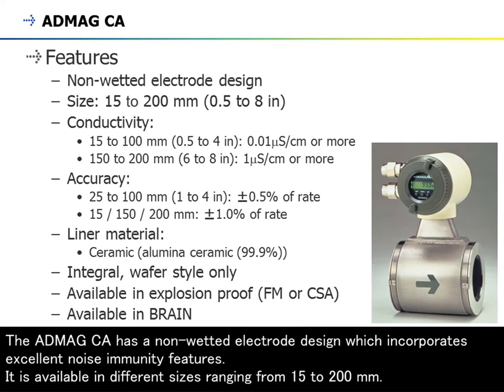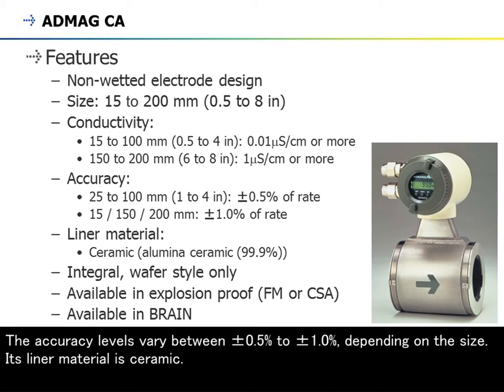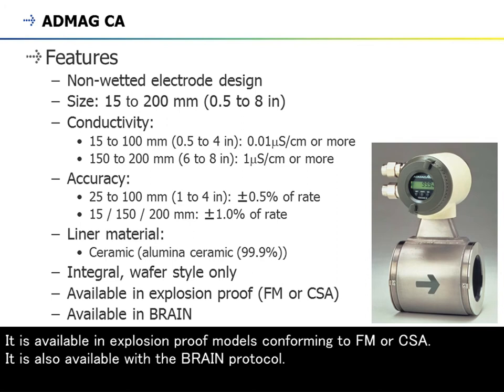The Abmec CA has a non-wetting electrode design which incorporates excellent noise immunity features. It is available in different sizes ranging from 15 to 200 millimeters. The Abmec CA is suitable for ultra-low conductivity measurement ranging from 0.01 microsiemens to higher conductivities depending on the flow meter size. The accuracy levels vary between plus or minus 0.5% to plus or minus 1.0%, depending on the size. Its liner material is ceramic. It is available in explosion-proof models conforming to FM or CSA, and is also available with the BRAIN protocol.